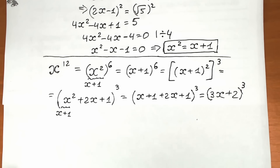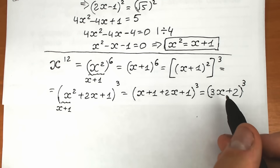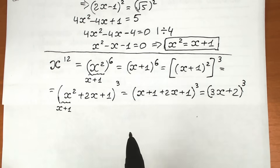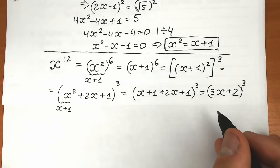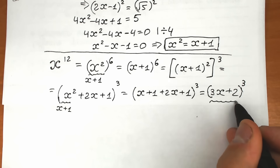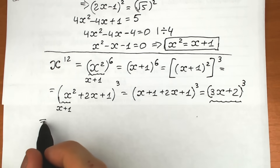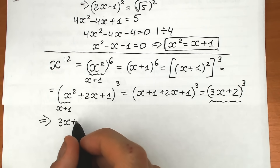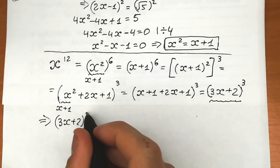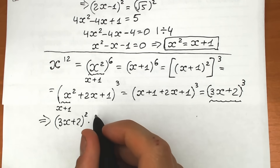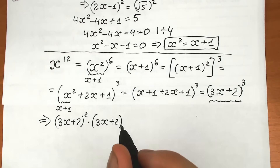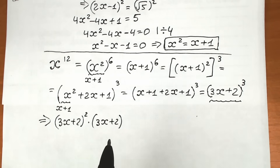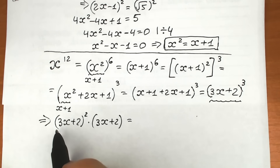Now let's write the cube as a square times the base: (3x+2)³ = (3x+2)² × (3x+2). Let's expand (3x+2)² using the formula (a+b)² = a² + 2ab + b².